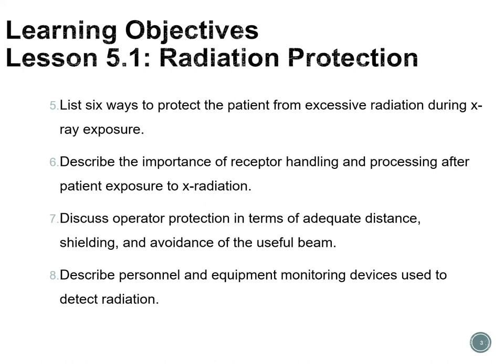To list six ways to protect the patient from excessive radiation during x-ray exposure, describe the importance of receptor handling and processing after patient exposure to x-radiation, discuss operator protection in terms of adequate distance, shielding, and avoidance of the useful beam, and describe personnel and equipment monitoring devices used to detect radiation.